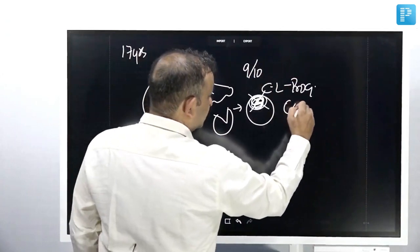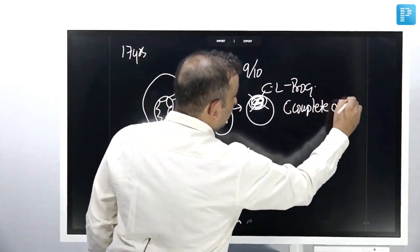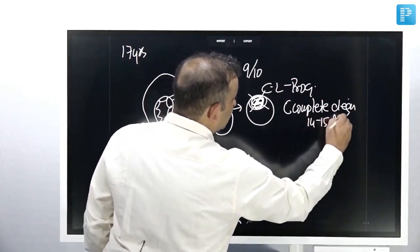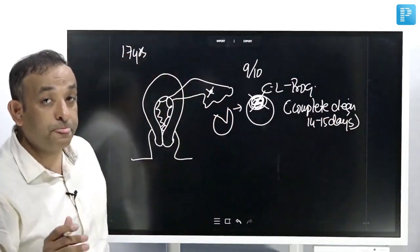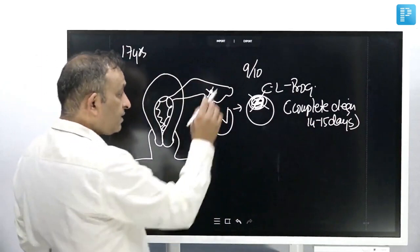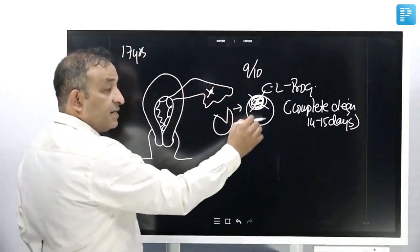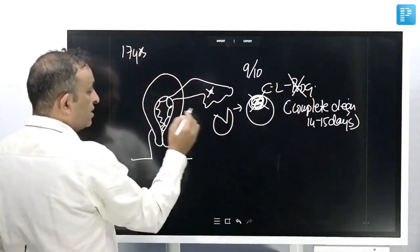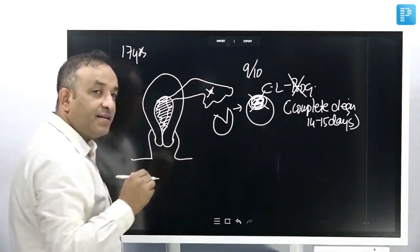The complete degeneration, complete degeneration MCQ of the corpus luteum takes place 14 to 15 days. These are MCQs, the maximum function of a corpus luteum is the 9 to the 10th day. In this 9 to 10th day, the embryo never came, corpus luteum degenerated and the progesterone reduced and the progesterone reduced that causes the shedding of the endometrium.